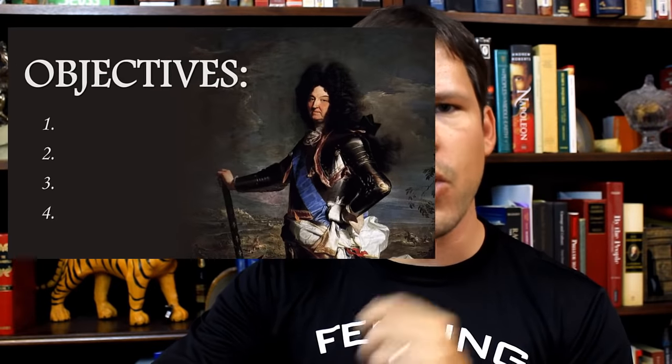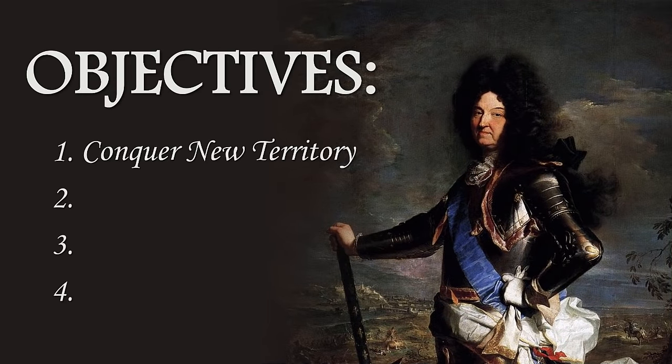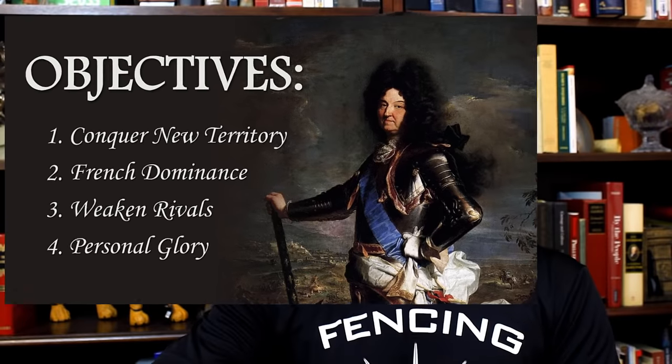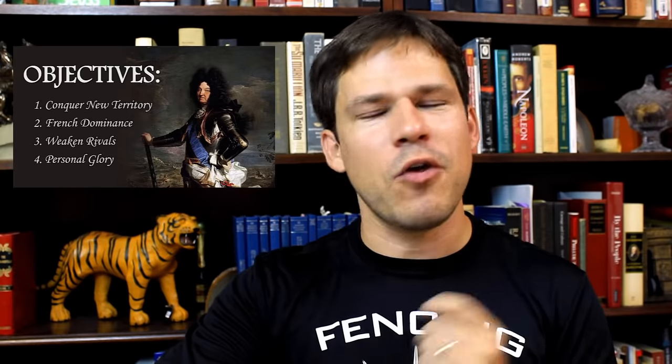When we look at Louis XIV's wars, there are four: the War of Devolution, the Dutch War, the Nine Years' War, and the War of the Spanish Succession. Two of these wars I'm going to especially emphasize — the Dutch War and the War of the Spanish Succession. His objectives: when Louis XIV went to war, he sought to do four things. He sought to conquer new territory, achieve French dominance in Europe, weaken rivals, and of course he wanted personal glory. The fourth of these is the most controversial.